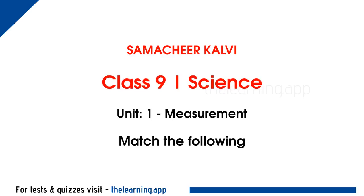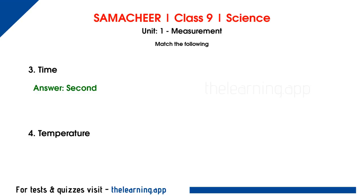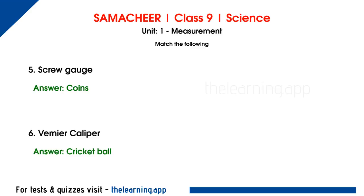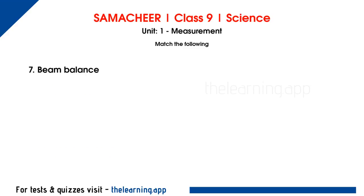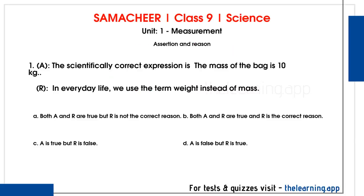Next, match the following: Length — unit is meter. Mass — unit is kilogram. Time — unit is second. Temperature — unit is Kelvin. Screw gauge — used to measure thickness of coins. Vernier caliper — used to measure cricket ball. Beam balance — used to weigh vegetables. Digital balance — used to weigh gold ornaments.